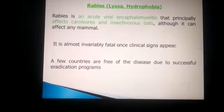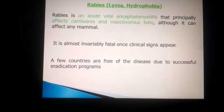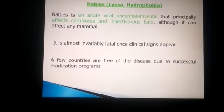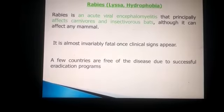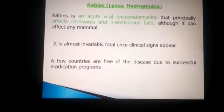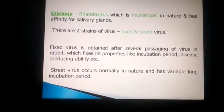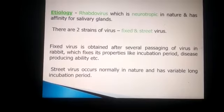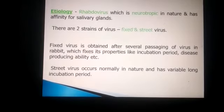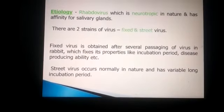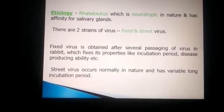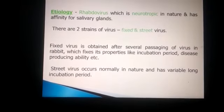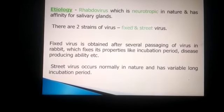A few countries are free from this disease due to successful eradication programs. Rabies is caused by a rhabdovirus, which is a neurotropic virus in nature and has an affinity for the salivary glands. There are two strains of the virus: the fixed strain and the street strain.